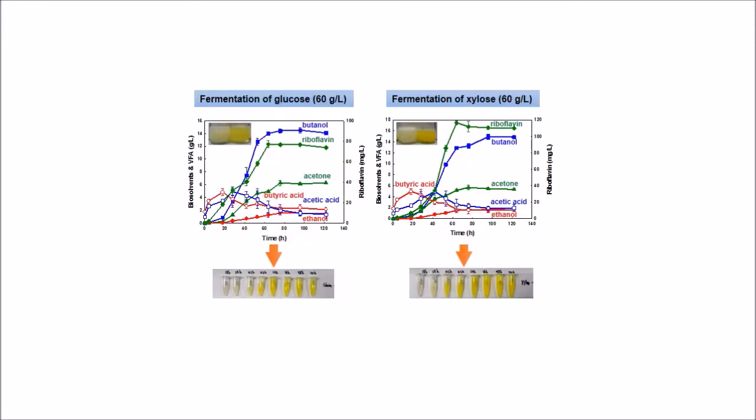Clostridium beijerinckii is particularly interesting since it produces similar amounts of butanol from both glucose and xylose. Particularly for xylose, it produces significantly larger amounts of riboflavin, another commercially important product.